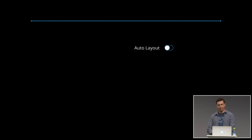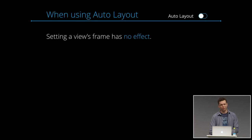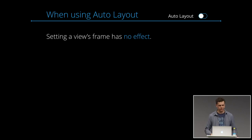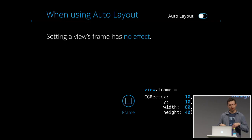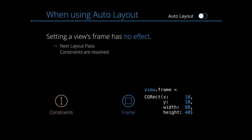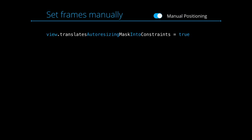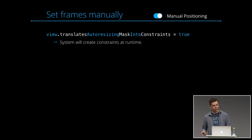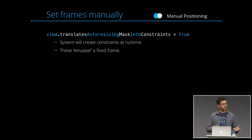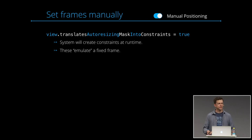Think of translatesAutoresizingMaskIntoConstraints as a toggle between Auto Layout and manual positioning. Sometimes you still want to use manual positioning and determine frames exactly without constraints. If you use Auto Layout, setting a view's frame has literally no effect — in the next layout pass, constraints are resolved, a new frame is computed, and the frame you set is overridden. But if you enable this property, the system creates hidden constraints at runtime that emulate a fixed frame. These constraints are hidden from you, and that's where you get all the conflicts.